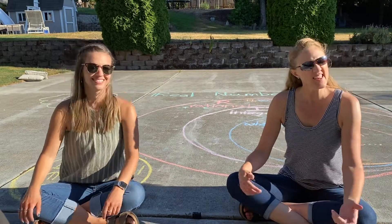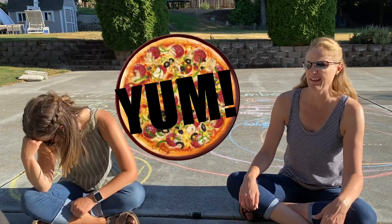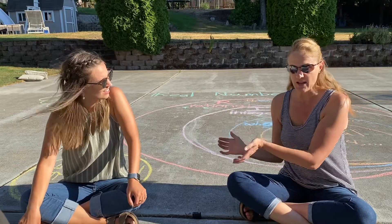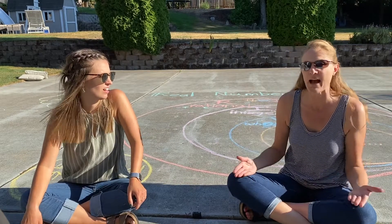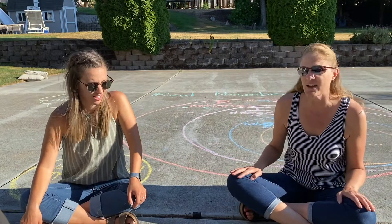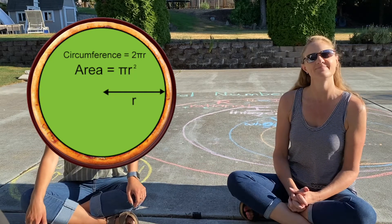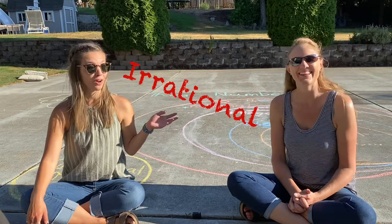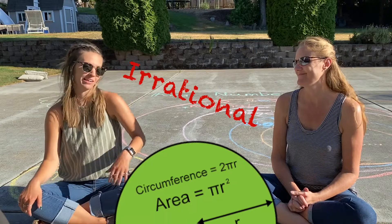How about this situation: say I want to get the best value when ordering pizzas. I might figure out the square inches of the large and the extra large, how much each one costs, and the cost per square inch to find the best value. So if I'm finding the area of a pizza, which subset of numbers would that be? You'd be irrational — because to find the area of a circle, I'd need to use pi, so it's irrational.